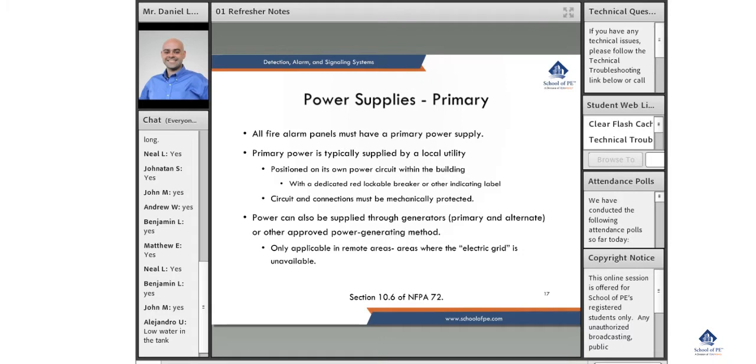It doesn't always have to be; there are exceptions. It's in section 10.6 of NFPA 72, also addressed sometimes in the model codes. Your primary power supply is positioned on its own circuit within the building.